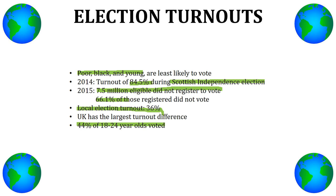The population of the UK is about sixty four million approximately, and seven point five million eligible people didn't register to vote — quite a high number that shows how much people don't want to take part in elections nowadays. Sixty six point one percent of those who registered did not vote, which is a pretty shocking number.